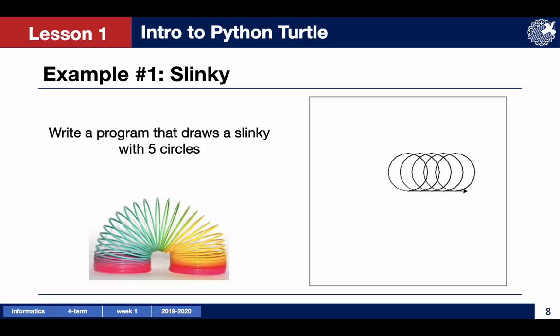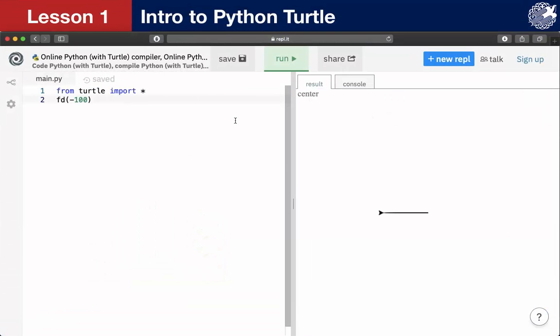Now let's look at the example called slinky. We must write a program that draws a slinky with 5 circles. Let's start from drawing a circle. Let the radius be 50 pixels. Now let's check if everything is correct. As we can see, we have a circle with 50 pixels radius.